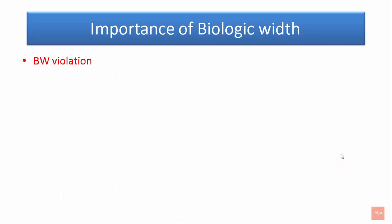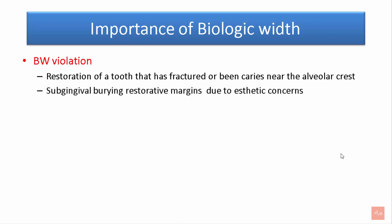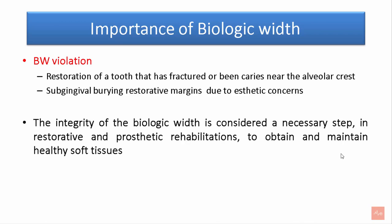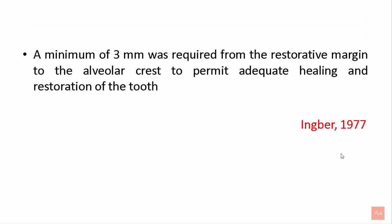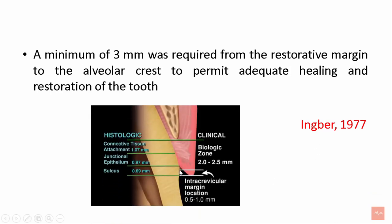What is the importance of biological width? Biological width violation can occur during restoration of a tooth that is fractured or carious near the alveolar crest, and subgingival placement of restorations for aesthetic reasons can also cause violation. The integrity of biological width is a necessary step in restorative and prosthetic rehabilitation to maintain healthy soft tissues. Ingber suggested that a minimum of 3 mm is required from the alveolar crest to the restorative margin to permit adequate healing. This image shows a safe distance of 3 mm maintained from the crest of the alveolar bone to the margin of the restoration.